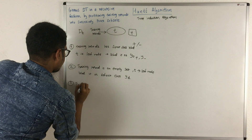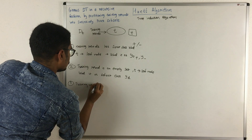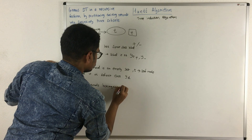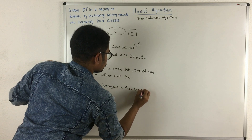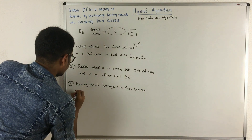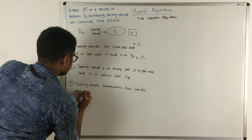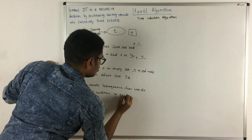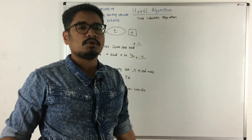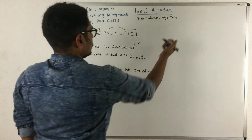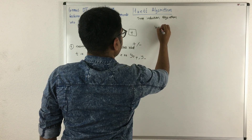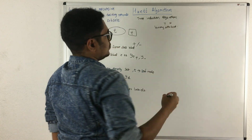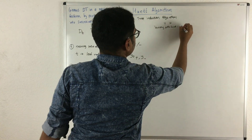Now, if your training record consists of multiple classes — that is, heterogeneous class labels — then you call the attribute test condition to split. We have different types of attributes in machine learning. The basic type is the binary attribute, such as yes/no or spam/not spam. For this, it performs a two-way split.